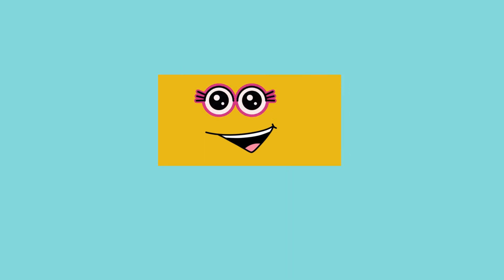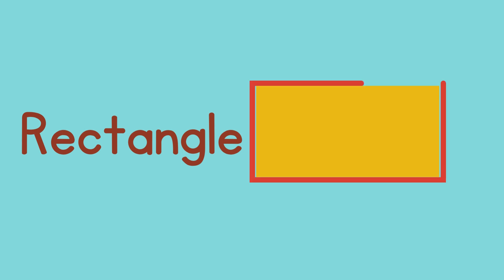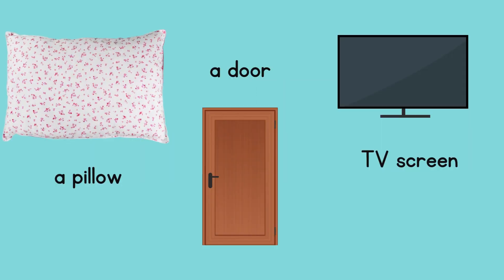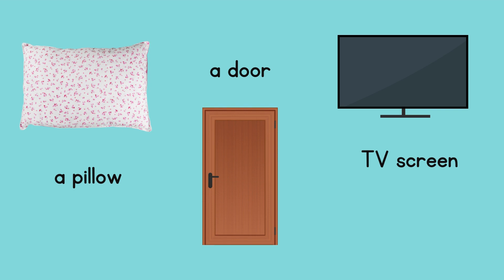Just like a square, but it's like a long square — it's called a rectangle! It has four corners, just like the square. A pillow is an example of a rectangle, a door also looks like a rectangle, and a TV screen is also an example of a rectangle.